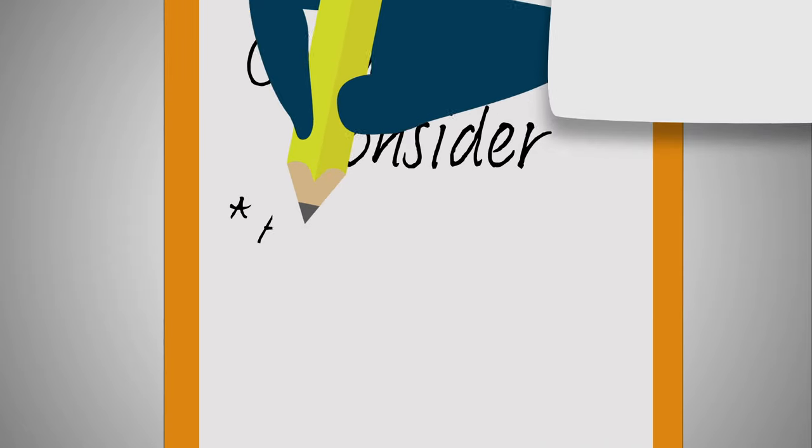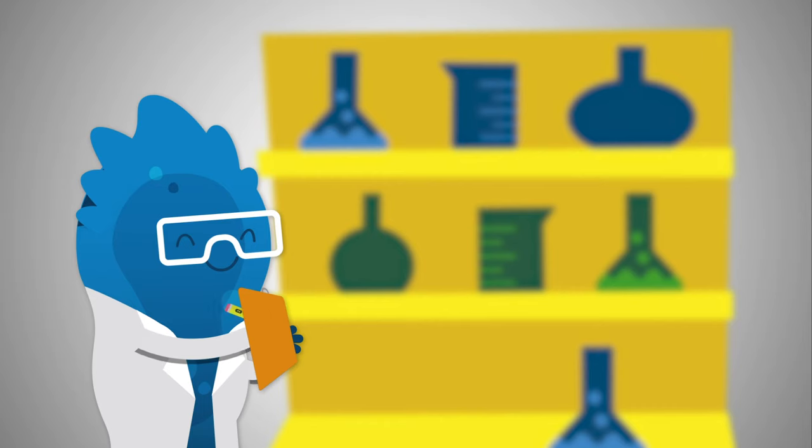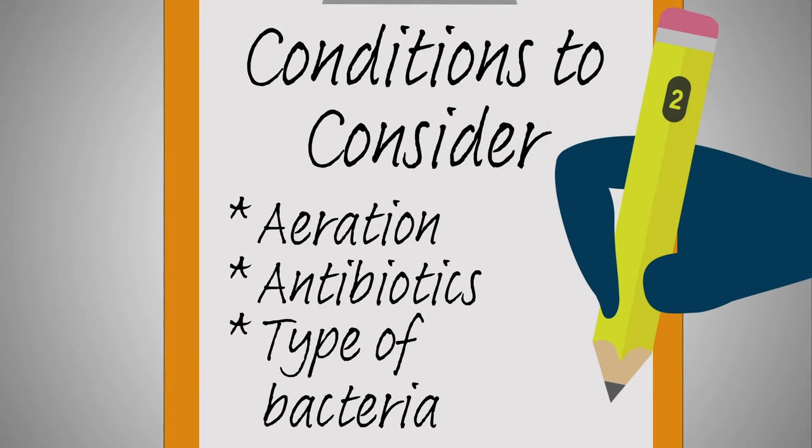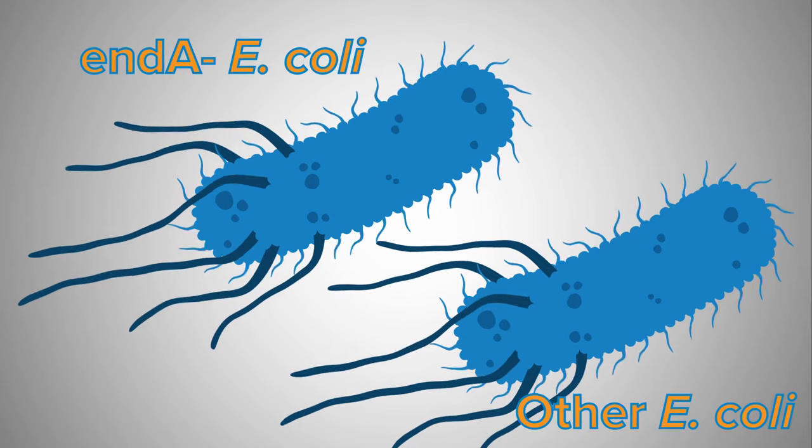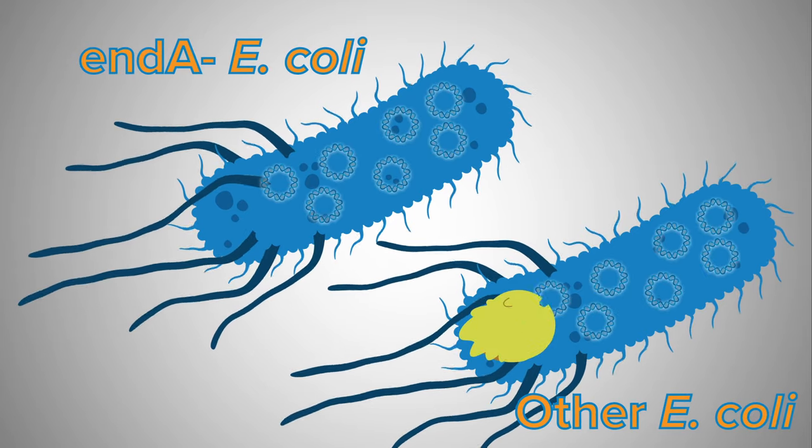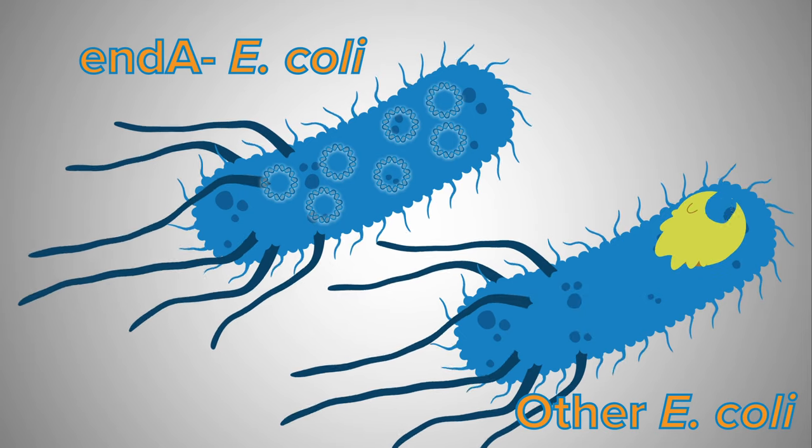There are a whole host of conditions to consider while choosing an ori, and how that will determine how much or how little your plasmids replicate. The type of bacteria could be a deciding factor. While most strains of E. coli can be used to propagate plasmids, some are more hospitable than others. For example, endA E. coli are best for high yields of plasmids, because they don't contain the endonuclease that can degrade plasmid DNA.